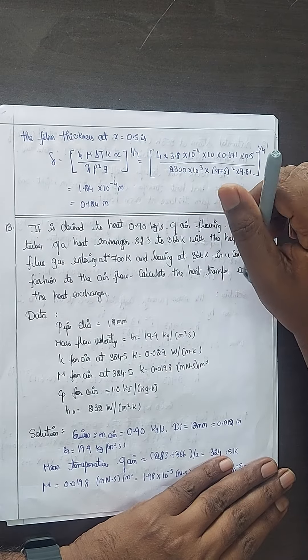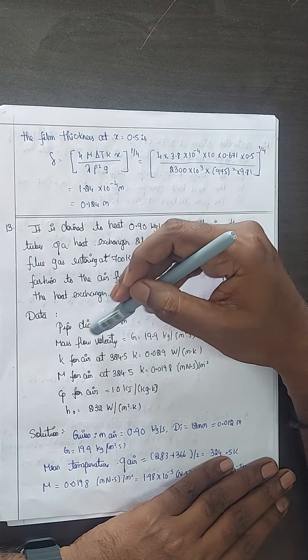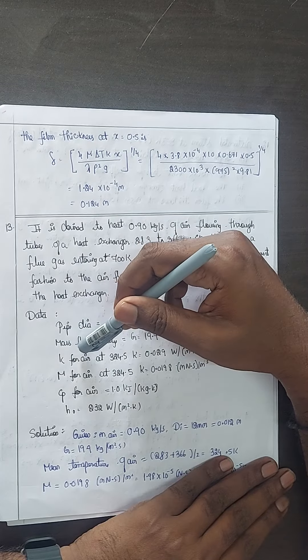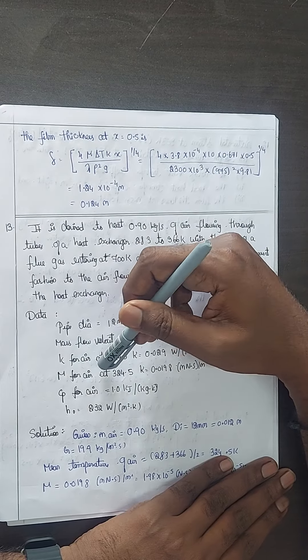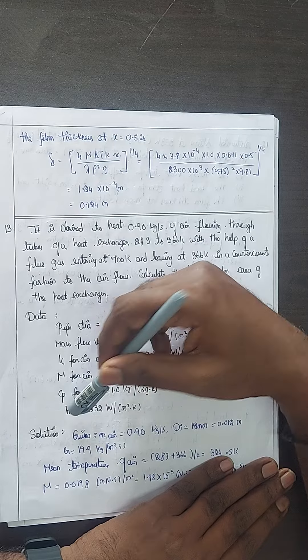Calculate the heat transfer area of the heat exchanger. Given: diameter of the pipe, mass flow velocity, thermal conductivity for air, viscosity for air, specific heat of air, and outside heat transfer coefficient.